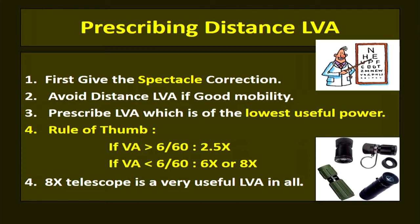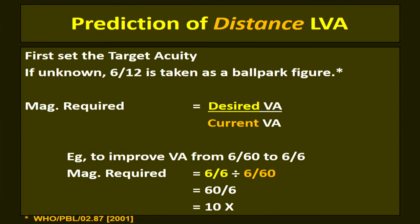Prescribe low vision aids of the lowest useful power. As a rule of thumb, if vision is better than 6/60, start with 2.5x magnification. If vision is less than 6/60, prescribe 6x or 8x magnification.